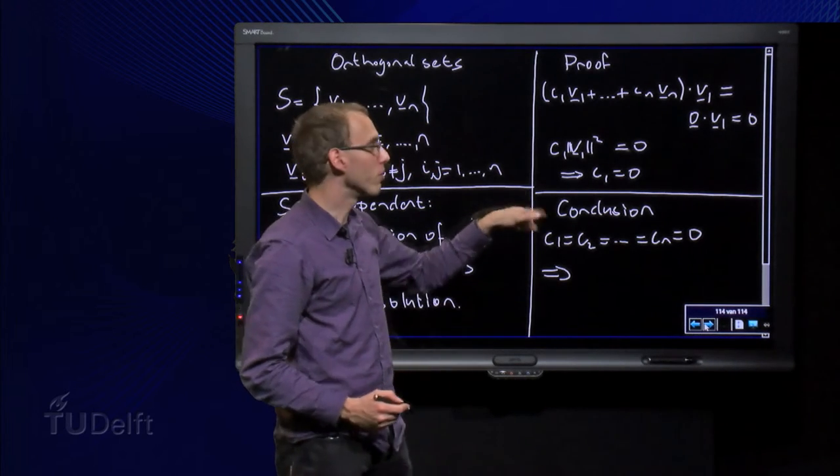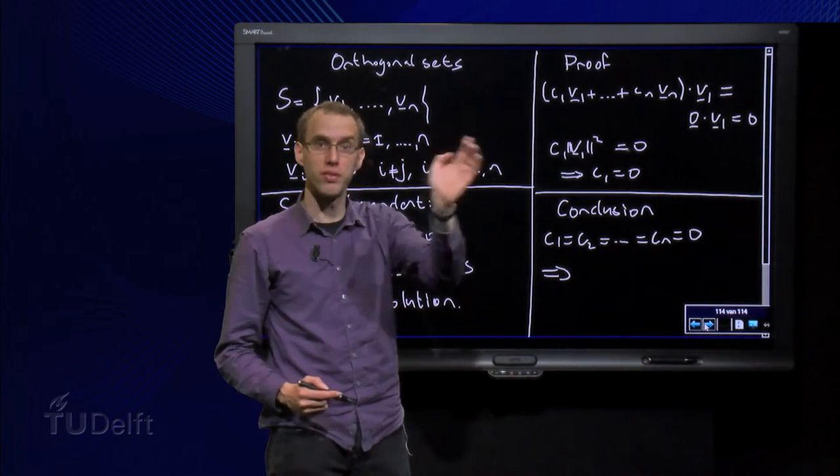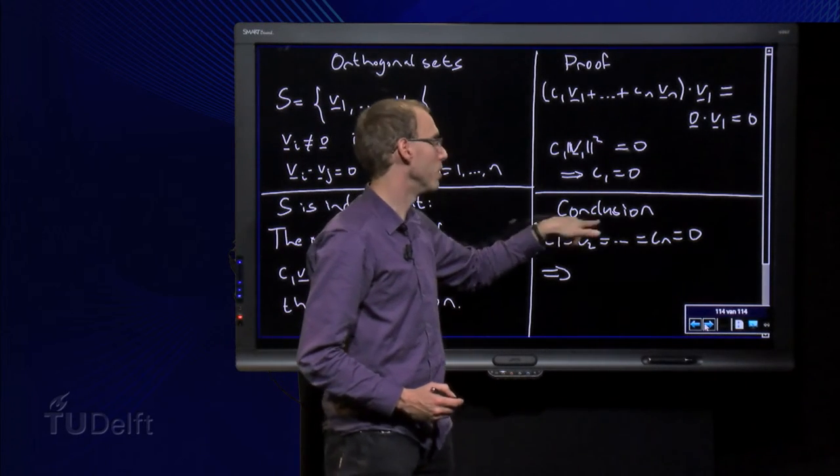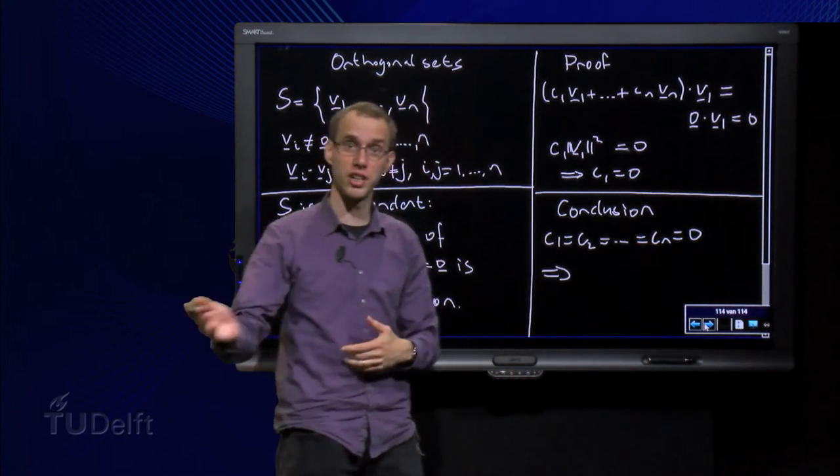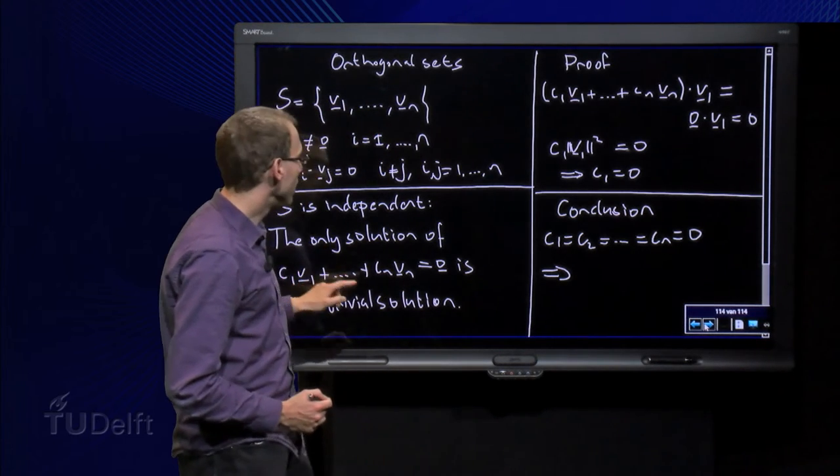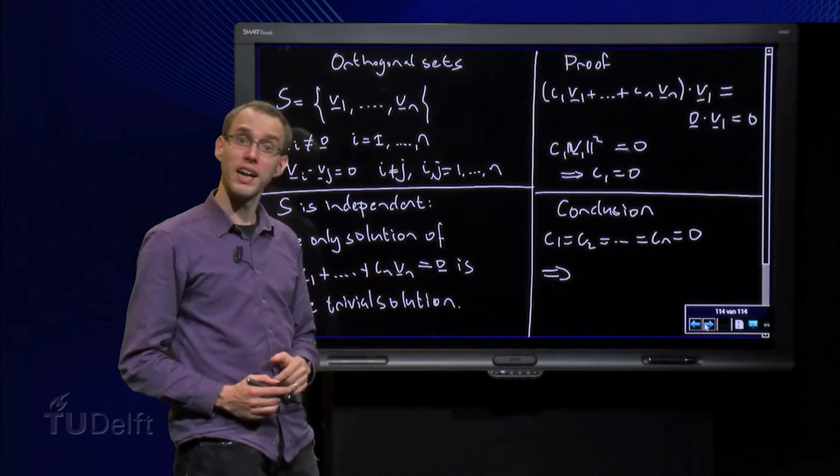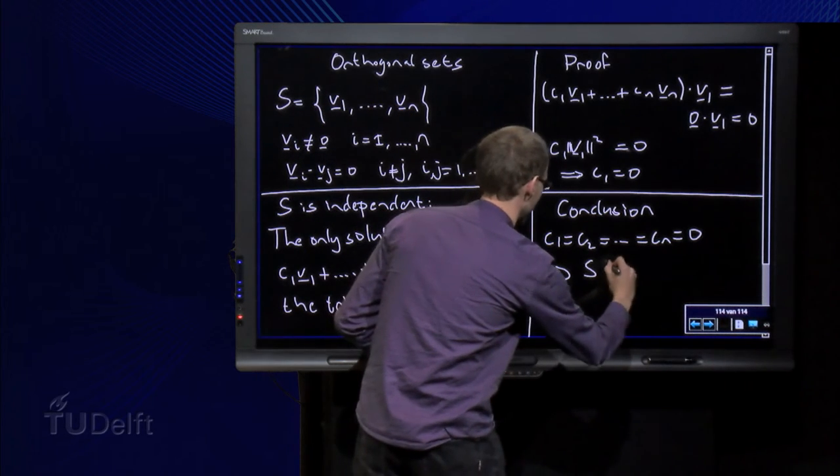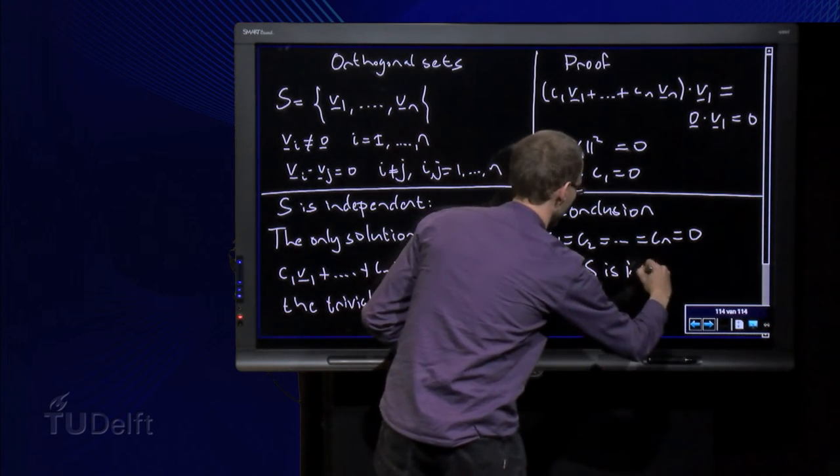So if we go on and on with all the other V1, V2, V3, V4 up to Vn, we conclude C1 equals C2 until Cn equals zero, so the only solution of the vector equation over here is the trivial solution, which means that S is independent.